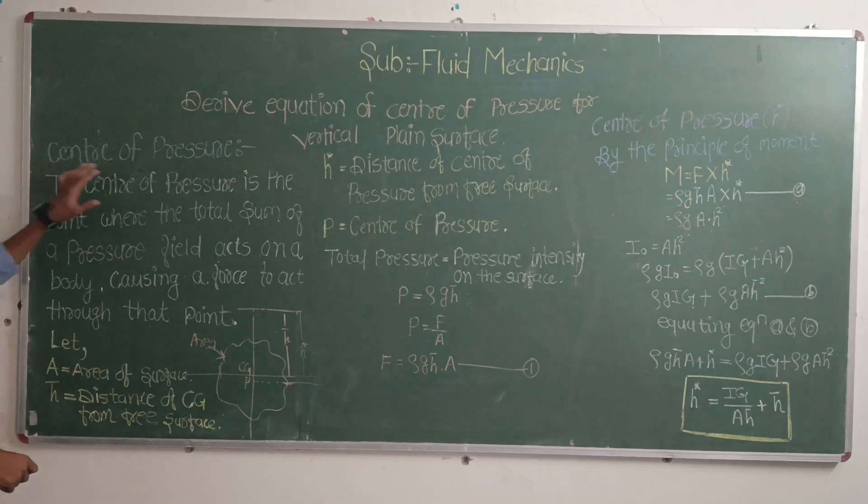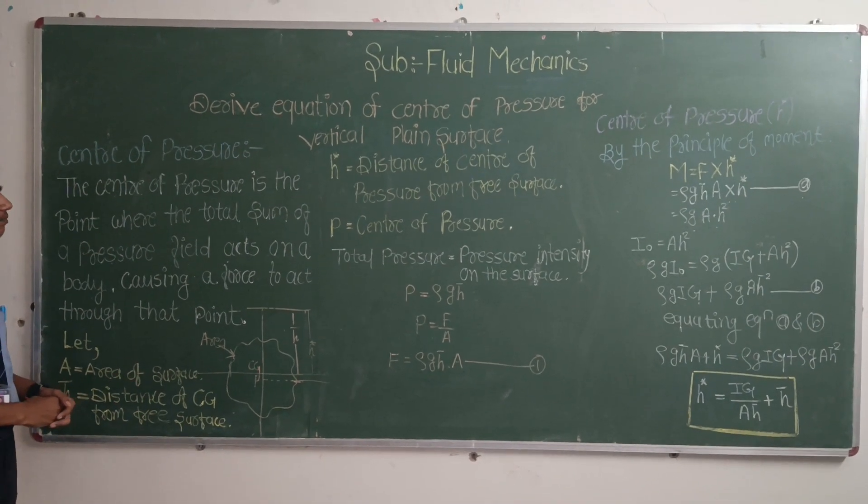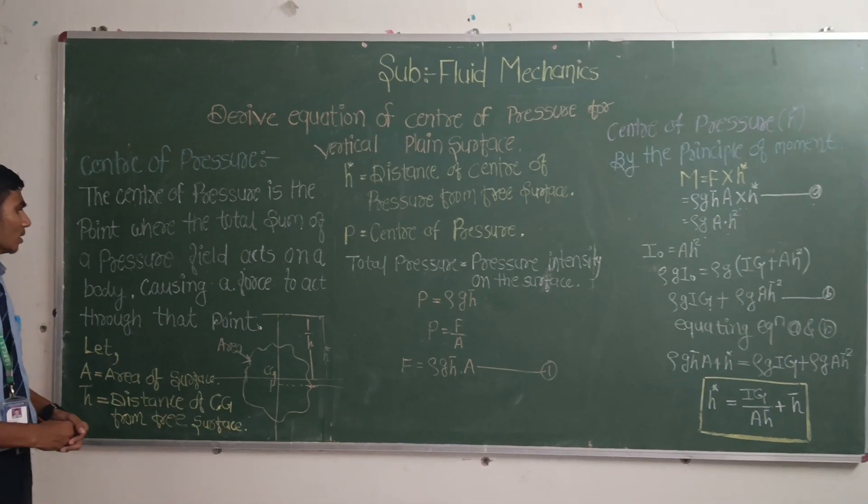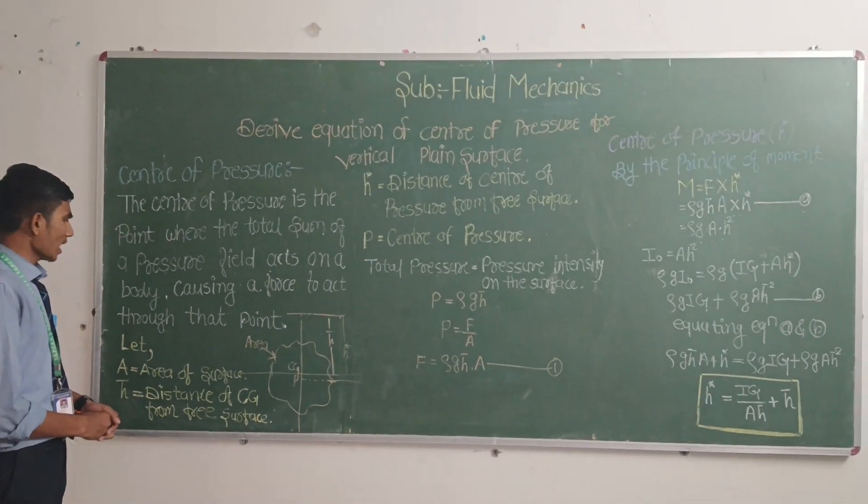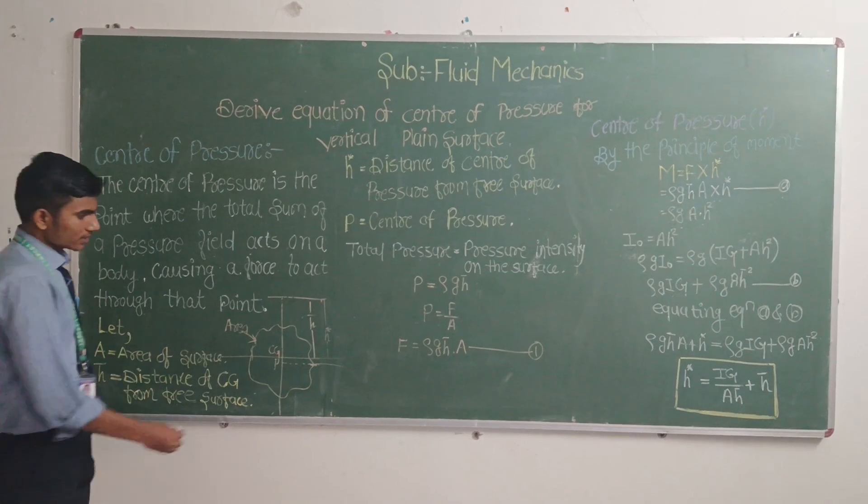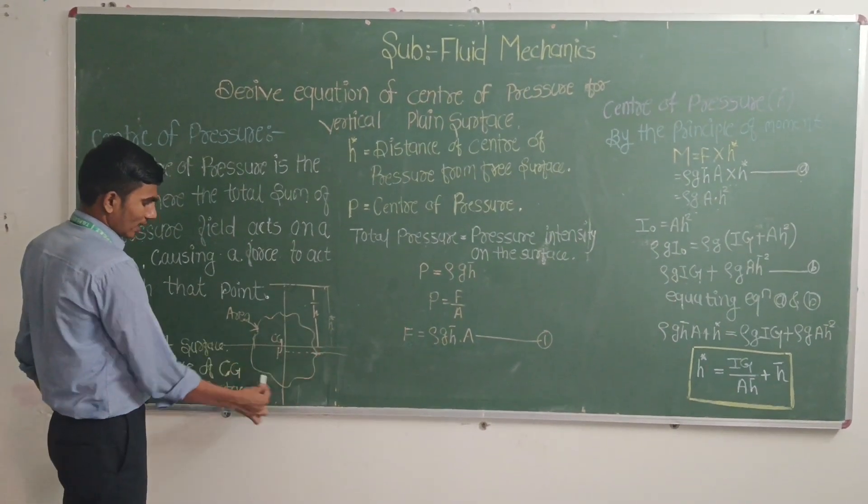Let me explain the center of pressure. The center of pressure is the point where the total sum of pressure exerted on a body acts through that point. This is a random body.